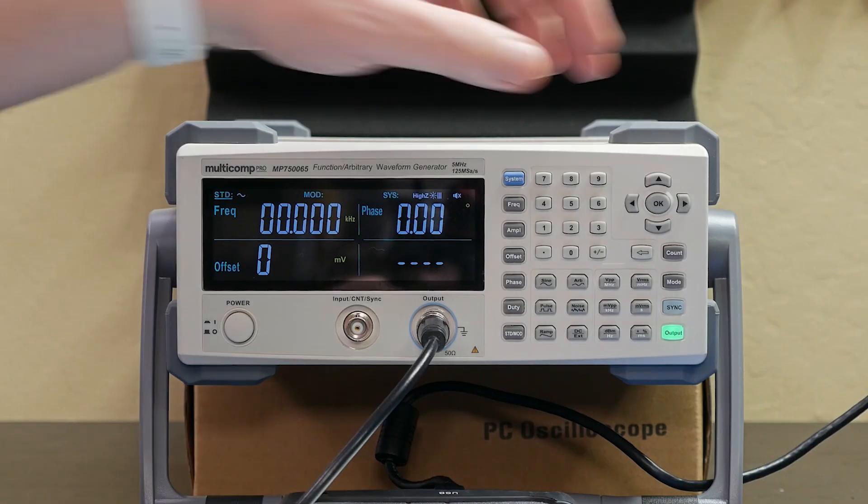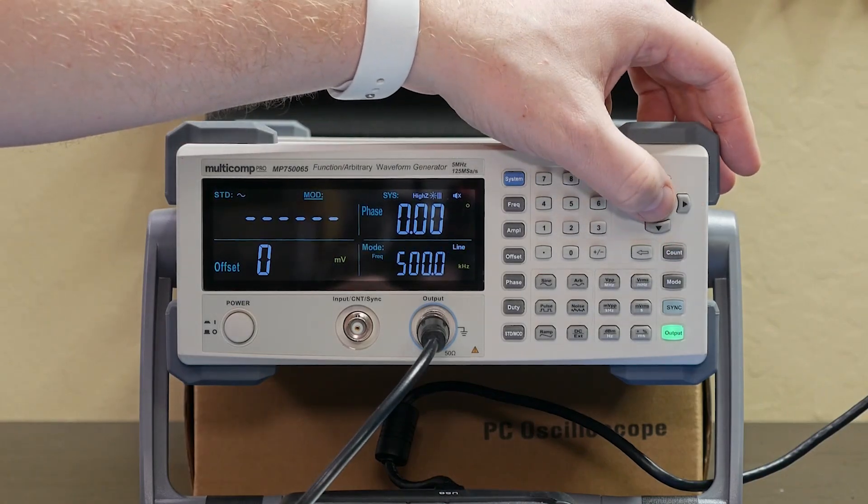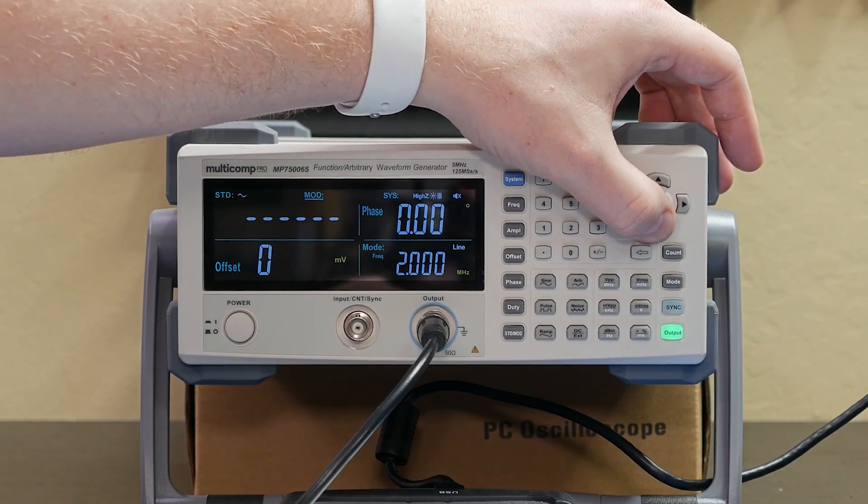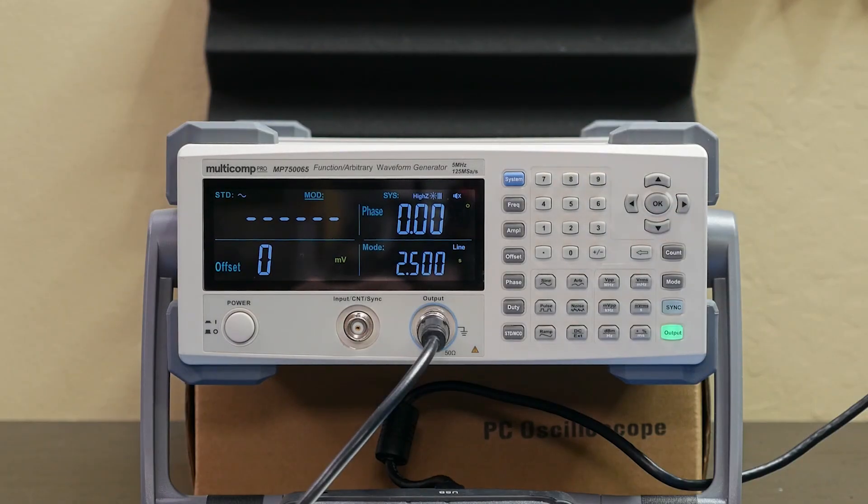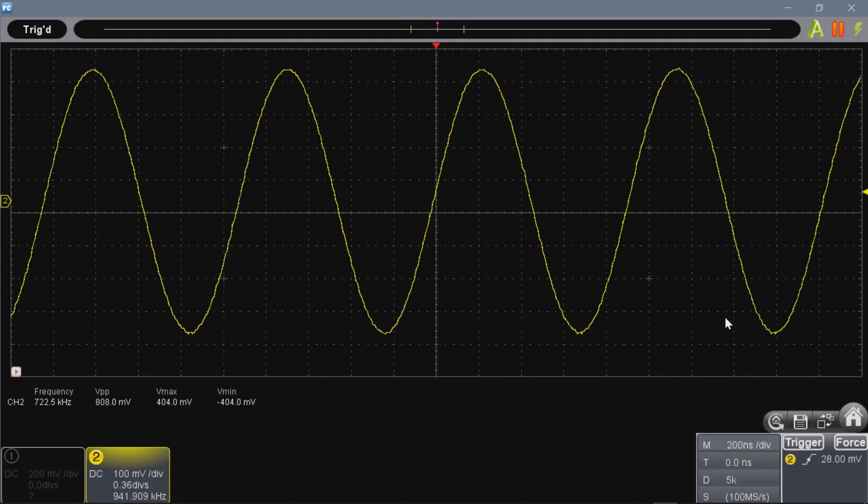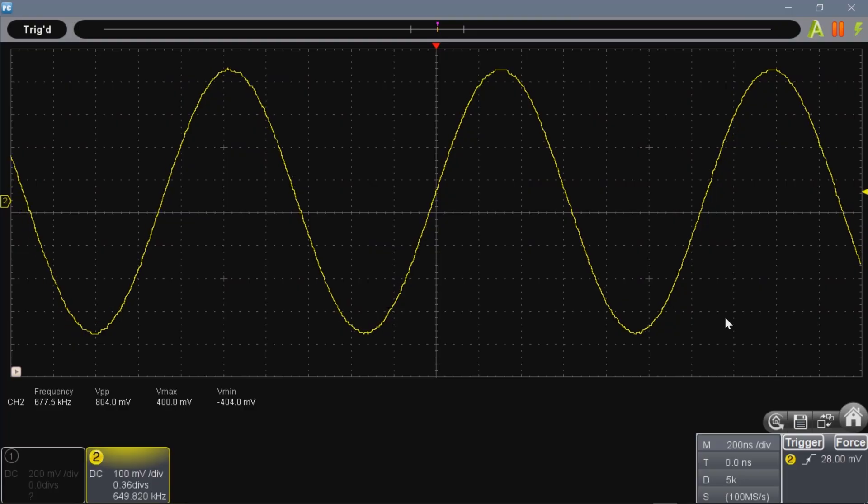In addition to the basic waveform controls, there are a couple of advanced features you can enable. Some generators support sweeping and modulation. Here, I have set the start to 500 kilohertz, the stop to 2 megahertz, and the sweep time to 2.5 seconds. On the scope, you can see how the frequency increases and then it starts over.